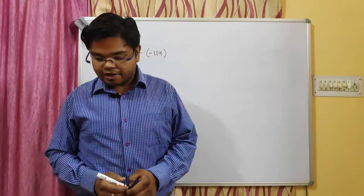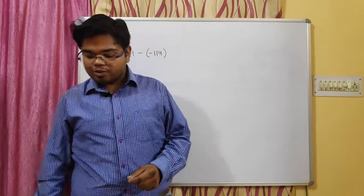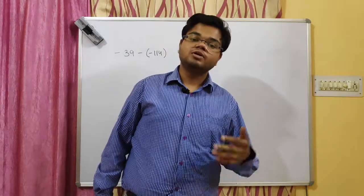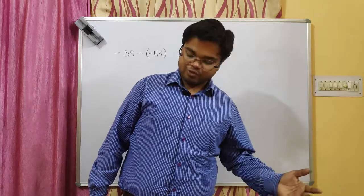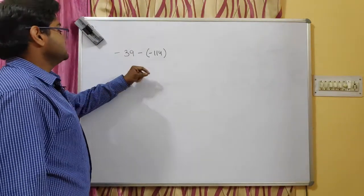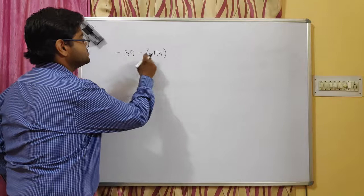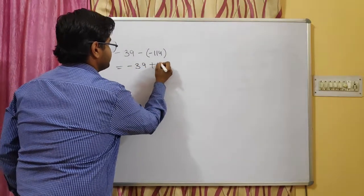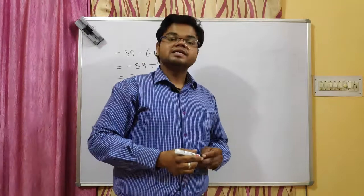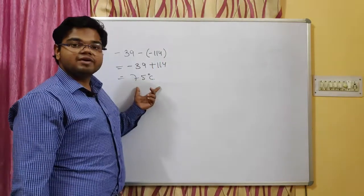Question number 8: Mercury at room temperature is a liquid. Its melting point is minus 39 degrees Celsius. The freezing point of alcohol is minus 114 degrees Celsius. How much warmer is the melting point of mercury than the freezing point of alcohol? You subtract: minus 39 minus minus 114. The minus minus becomes plus, giving minus 39 plus 114 equals 75 degrees Celsius. So mercury is 75 degrees Celsius warmer than alcohol.